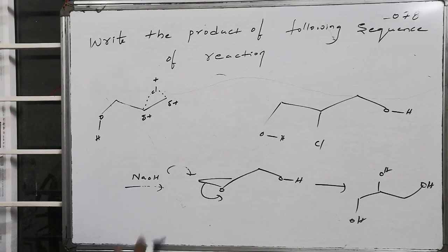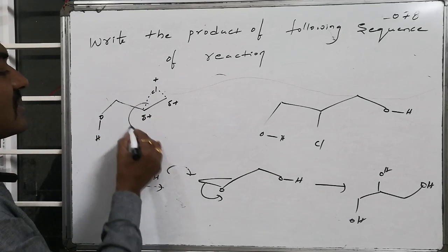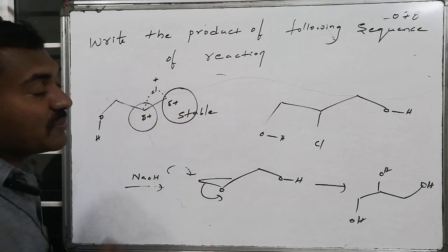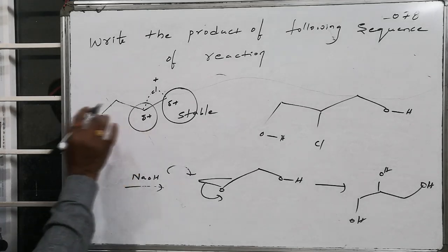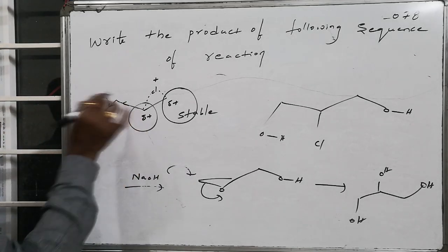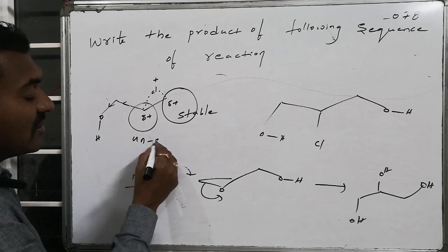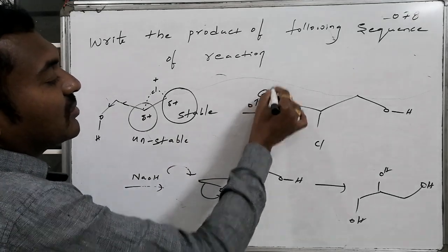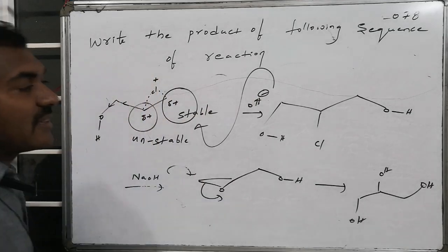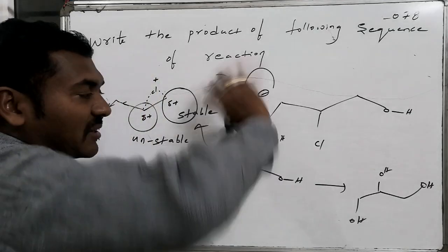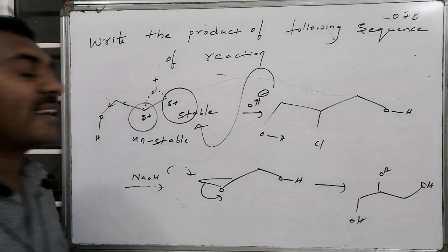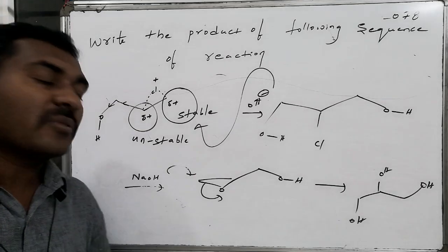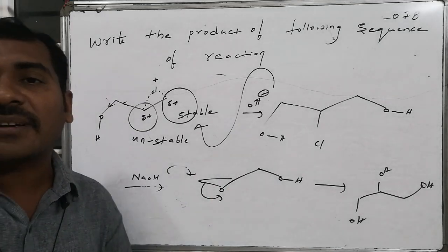To summarize: the partial positive charge at the internal carbon is unstable due to the adjacent electron-withdrawing group, while the terminal carbon is more stabilized. The incoming nucleophile OH⁻ attacks from the more stable terminal carbocation. This results in the formation of an internal chloro-1,3-dihydroxy compound, which further gives glycerol as the final product.